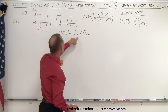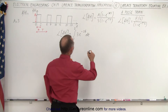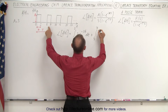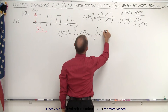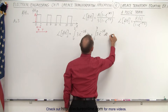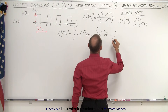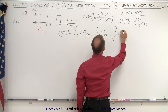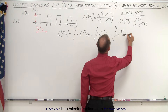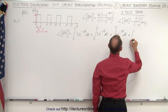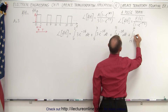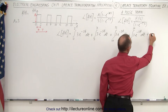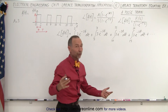That's the function times e to the minus st dt. Plus the second pulse, integrated from 5 to 7, giving us 3 e to the minus st dt. Plus the next pulse integrated from 10 to 12, giving 3 e to the minus st dt. Then 15 to 17, 3 e to the minus st dt, and so forth — however long the pulse train is.